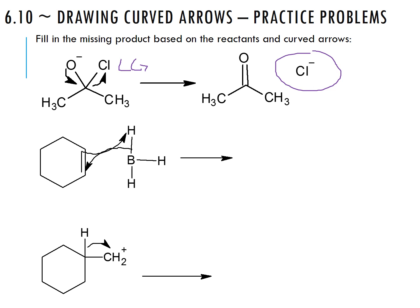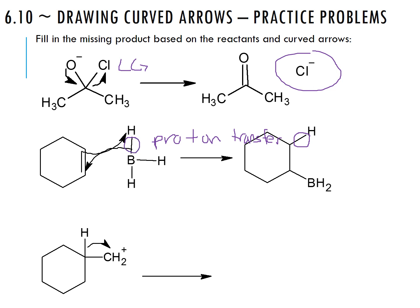This next one is a little trickier. We have two arrows: one going from our pi bond (our nucleophile) toward that hydrogen, and another going from those electrons toward the other carbon. This is a proton transfer — it's not as obvious as the others, but the movement of that hydrogen is what's key. The pi bond electrons were used here, and then the electrons between boron and hydrogen are now used between boron and carbon.